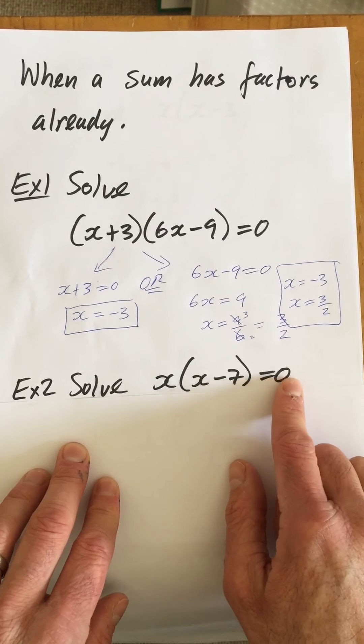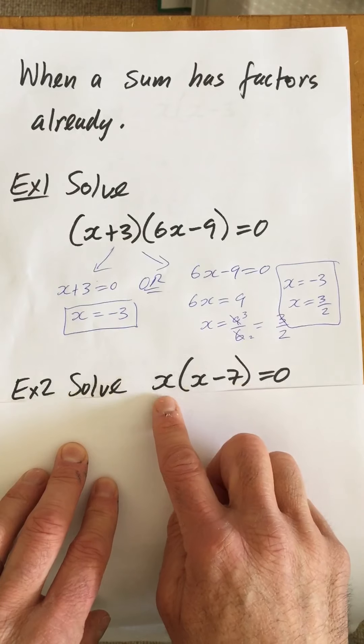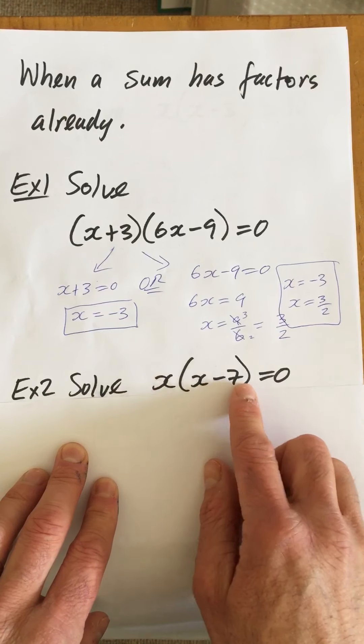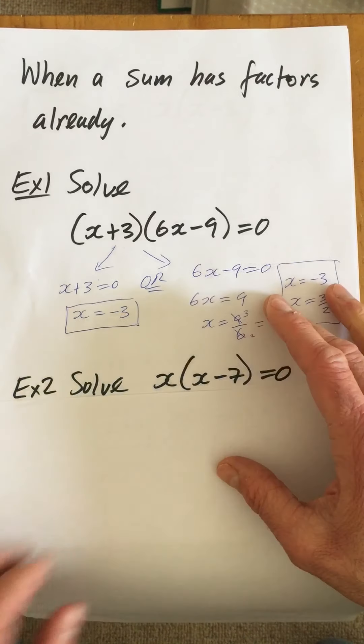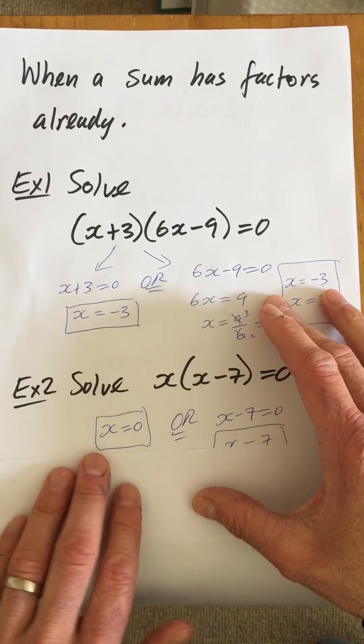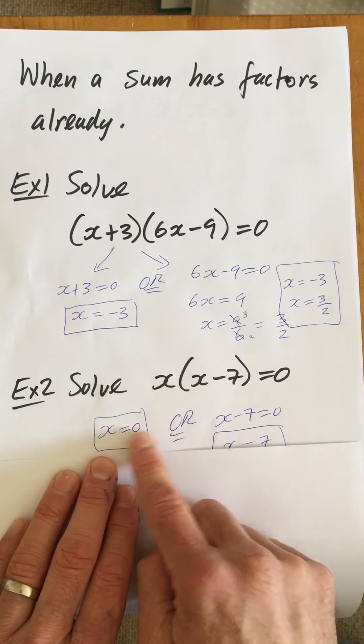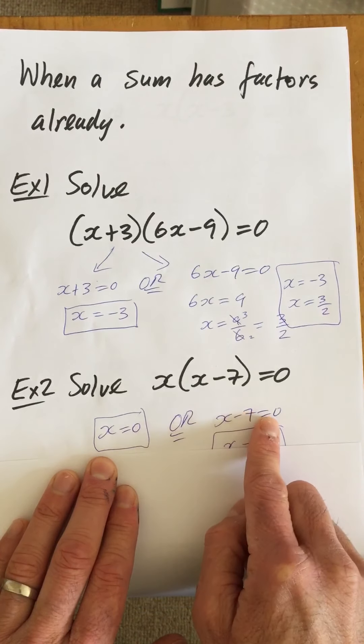Notice it's equal to zero. So we don't need to multiply the bracket out. We already have a factor x and another factor x-7. So we use our big idea to put each factor equal to zero separately. So we get x=0 and x-7=0.